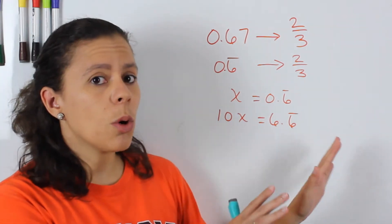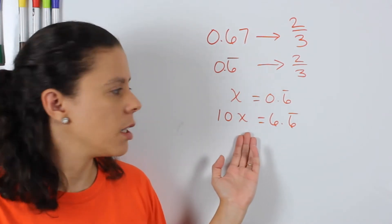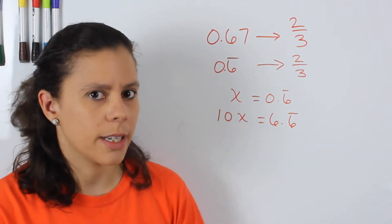Now whatever we do on one side, we have to do on the other side. So 10x is going to be equal to 6.6 repeating.